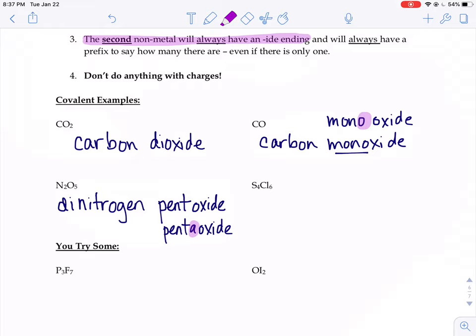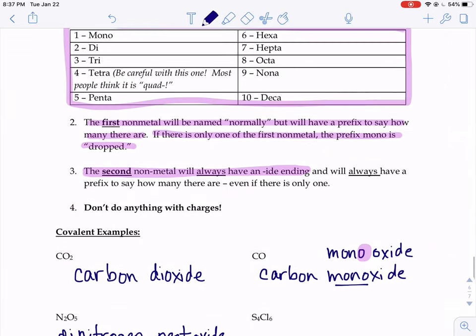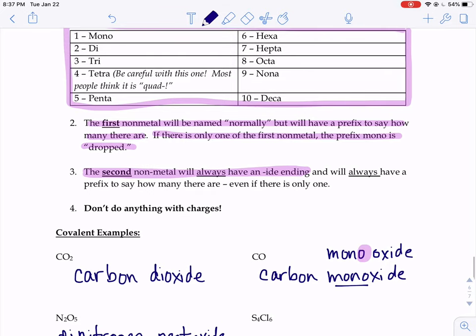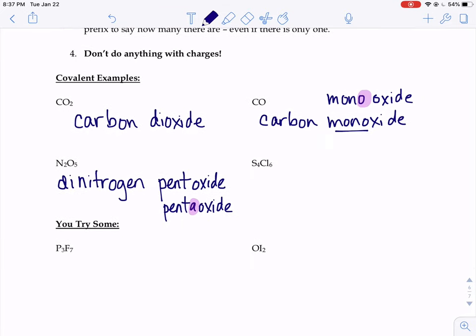One more example. The first one, we've got S4. So, four sulfur atoms. We need the prefix for four, which is tetra. Careful. A lot of people want to say quad. Tetra. First element is always written normally. Sulfur.